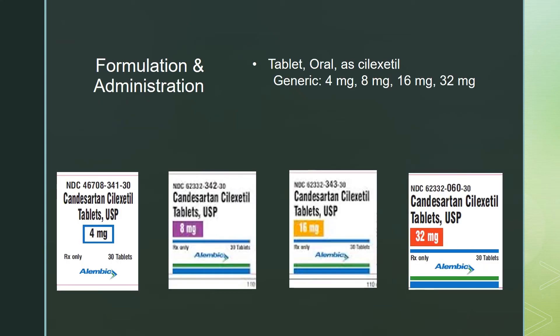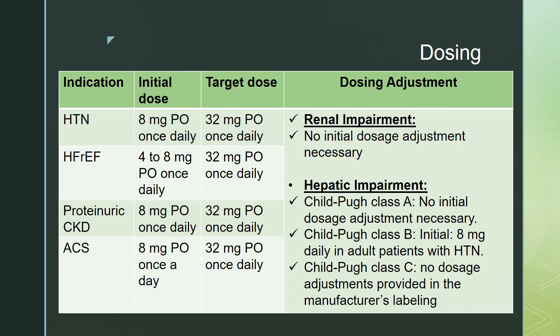This medication comes as an oral tablet form. The strengths are available in 4mg, 8mg, 16mg, and 32mg. The recommended initial dose and usual maintenance dose for Candesartan is 8mg once daily for hypertension. Most of the antihypertensive effect is attained within 4 weeks. In some patients whose blood pressure is not adequately controlled, the dose can be increased to 16mg once daily and to a maximum of 32mg once daily.